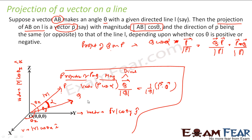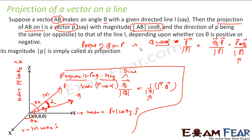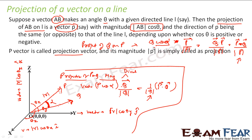So both are p dot q, but when you say projection of p on q, you divide by the magnitude of q; when you say projection of q on p, you divide by the magnitude of p. You can remember this, or you can logically derive it: find the magnitude — p cos alpha or q cos alpha — then multiply by the unit vector of the line you are projecting onto. The magnitude of the projection is called the projection, and the full vector expression is called the projection vector.